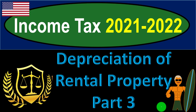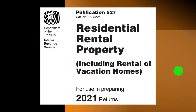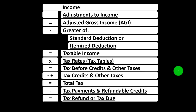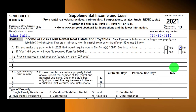Income tax 2021-2022, depreciation of rental property, part three. Most of this information can be found in Publication 527, Residential Rental Property, Tax Year 2021, on the IRS website irs.gov. We're focused on line one income of the income tax formula, which has a sub-schedule — essentially an income statement with income and expenses. The net rolls into line one on Form 1040 via Schedule E, the supplemental income and loss, focusing on rental real estate.